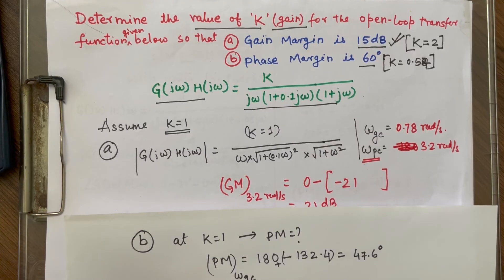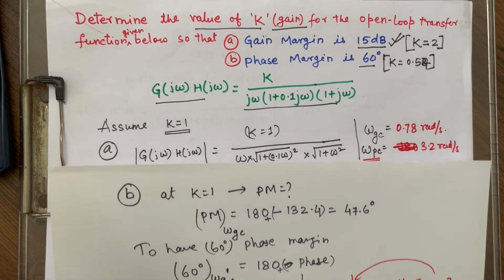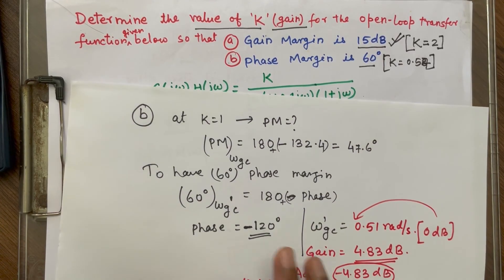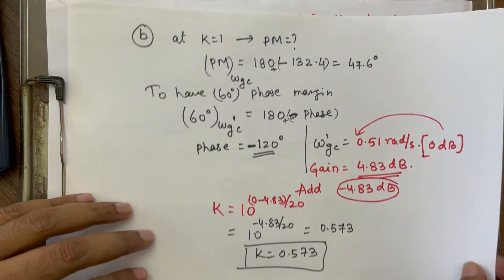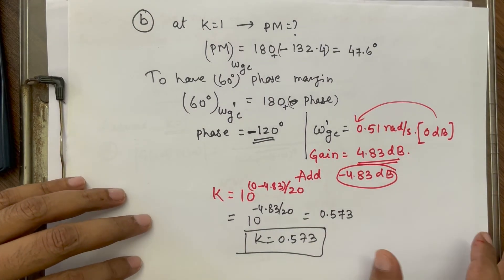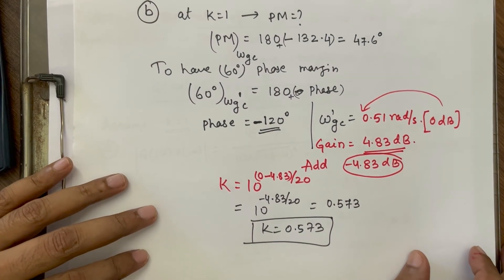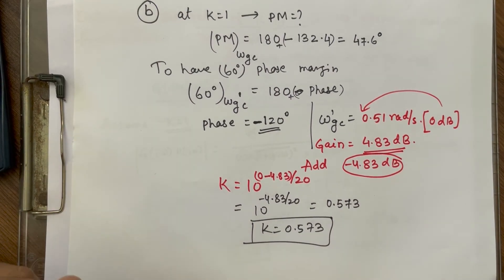This is how we can use a calculator without even using a Bode plot graph to find out the value of K. Thank you.